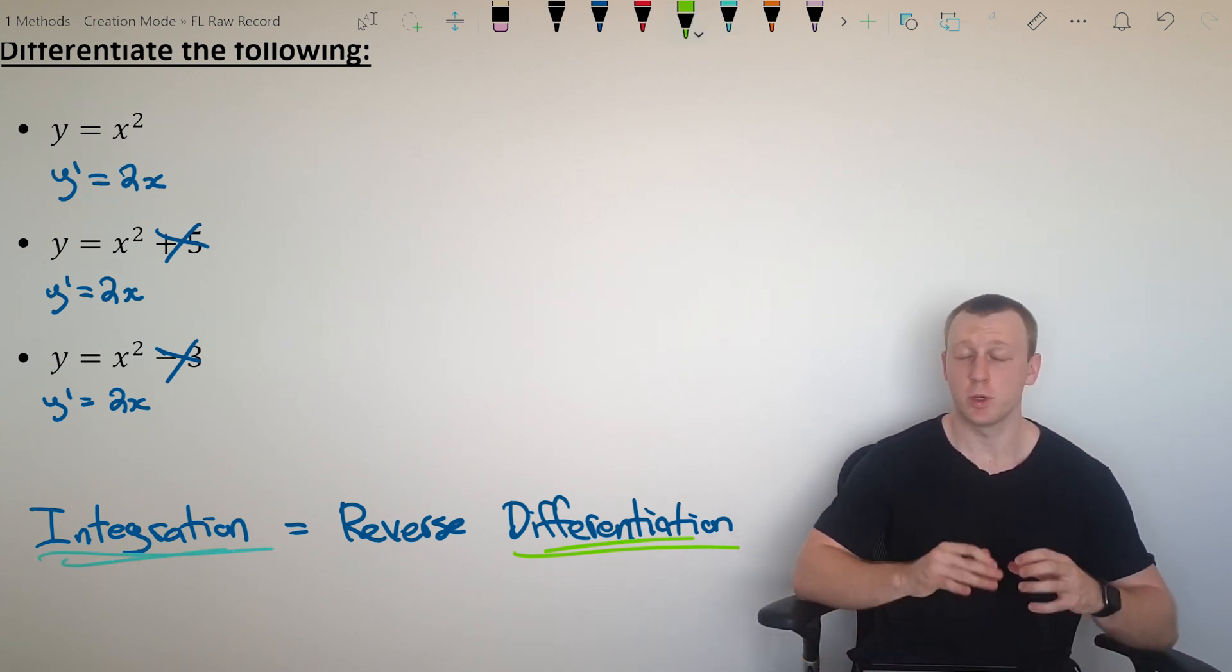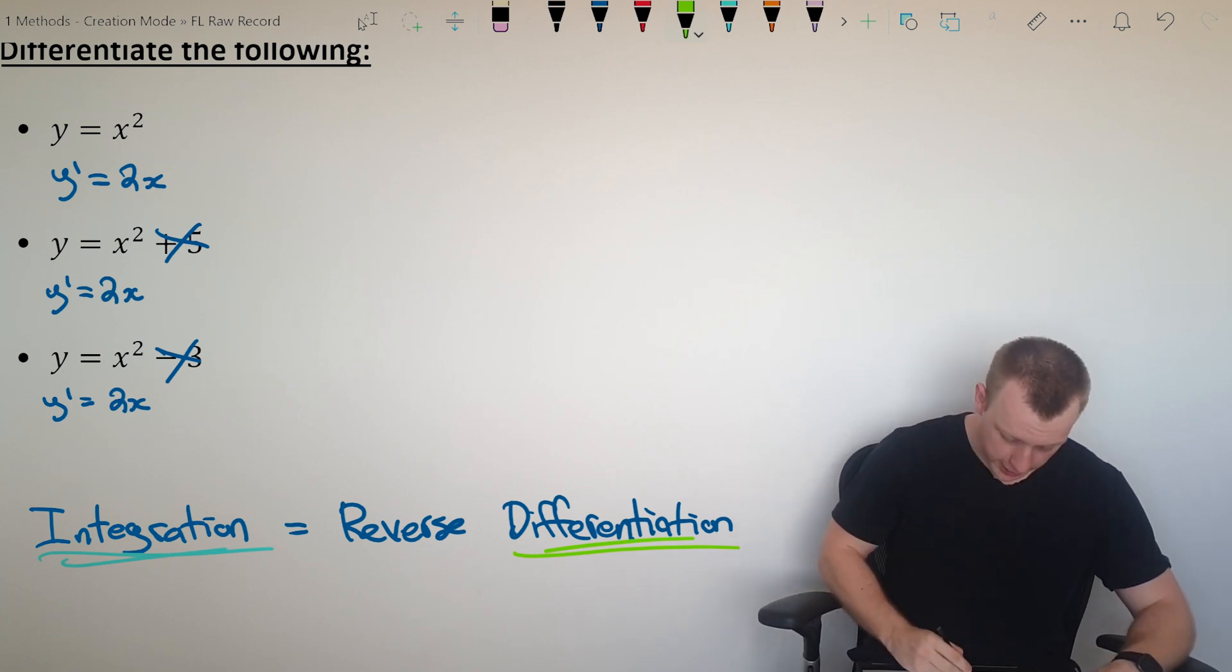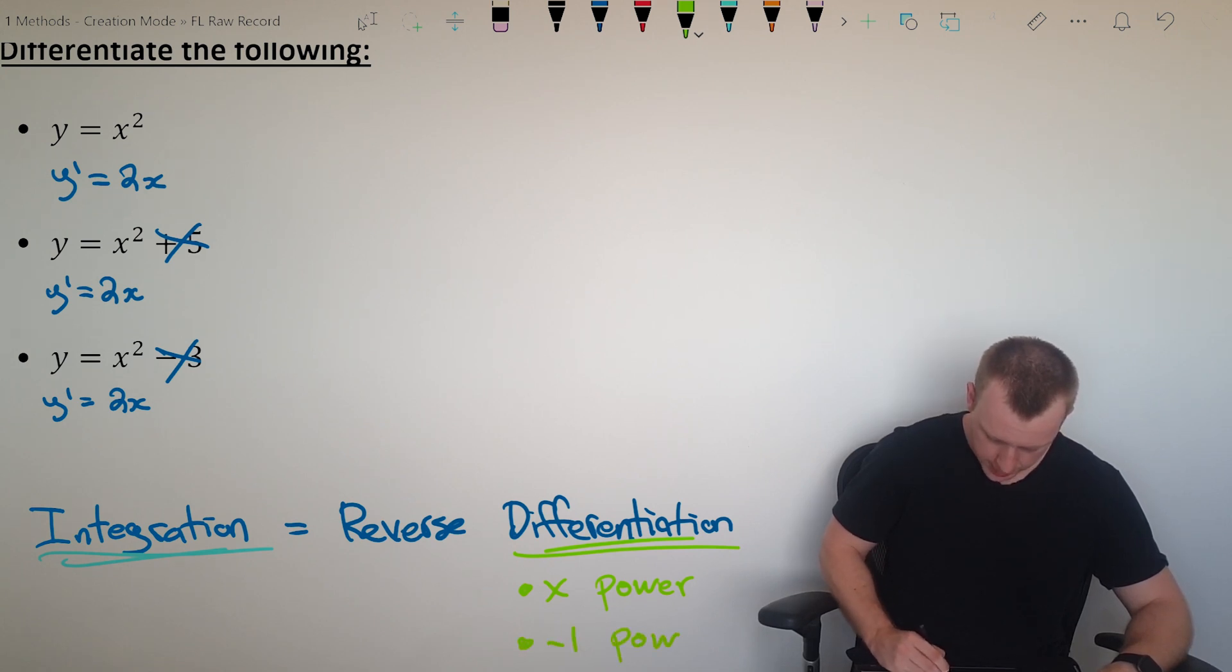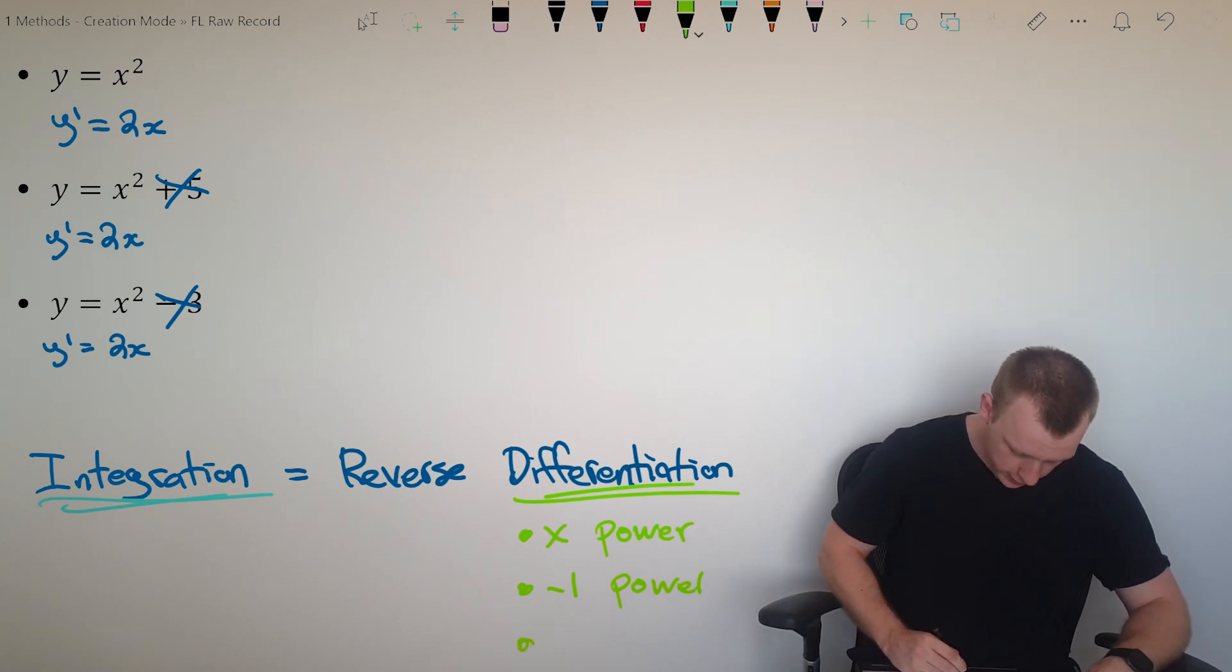When we differentiate, if we're just looking at polynomials for the time being, what we do is we multiply by the power, we subtract one from the power, and if there is a constant in our function, we remove it. We remove the constant. That's how we deal with the power rule. We've done it so many times.